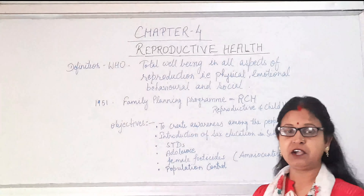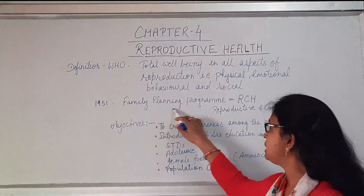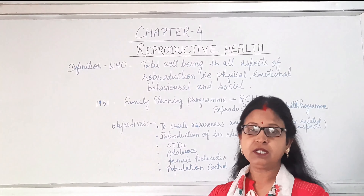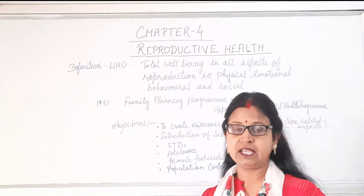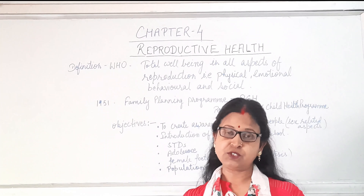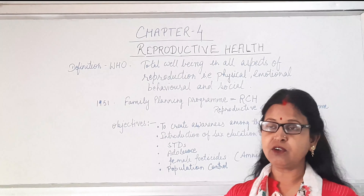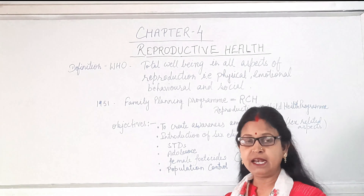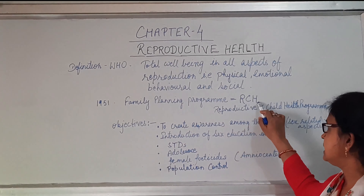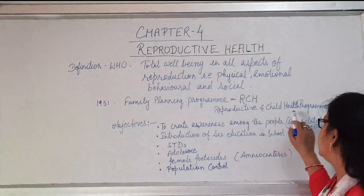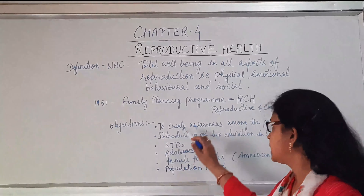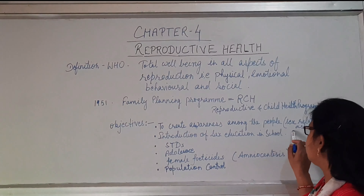In 1951, the Indian government launched the Family Planning Program, which was mainly based upon birth control, population control, as well as the well-being and care of the mother and child. This program was evaluated from time to time and is now known as RCH, that is the Reproductive and Child Health Program.